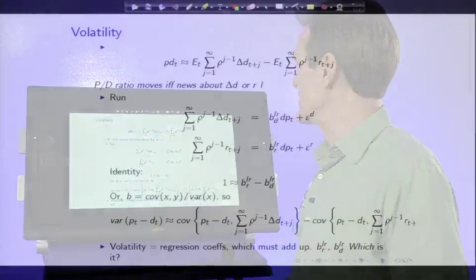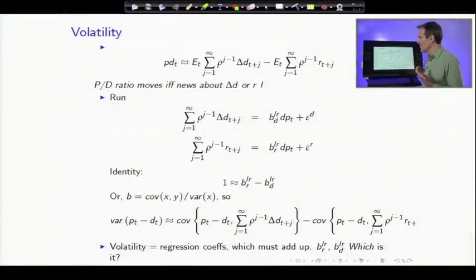Here's our identity just to remind you what it looks like. Price-dividend ratio is expected dividend growth and expected returns. It tells us that price-dividend ratios move only if there's news about expected dividend growth or expected returns in the long run.